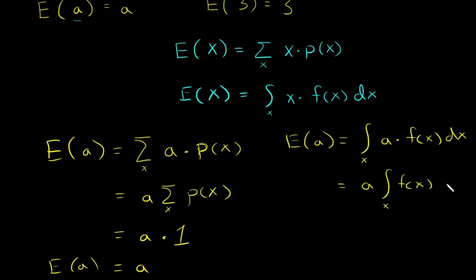And then once again, by definition of probability density functions, this equals one. And then you get a. So the expected value of a constant is just itself, and this is the proof for how you get there.